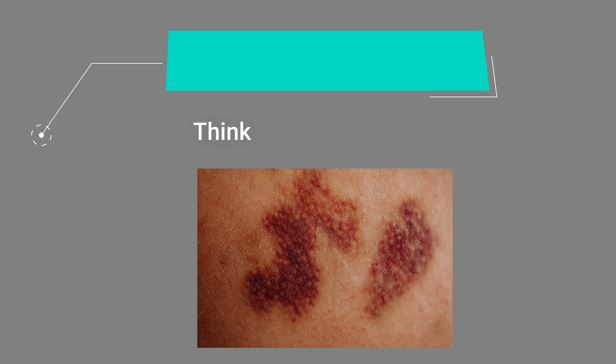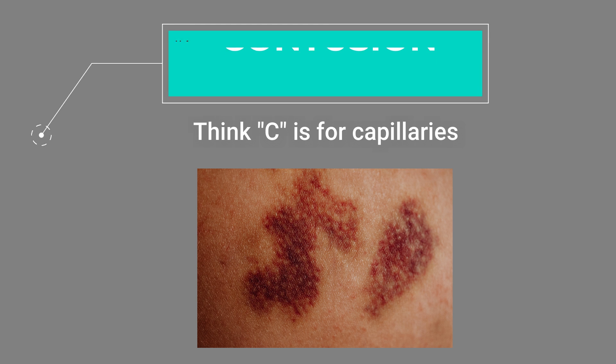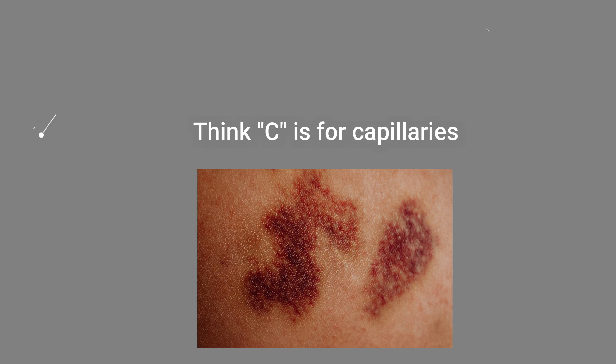Next we are moving on to contusion. The description of a contusion is an area of broken capillaries or venules beneath the skin with extravasation of blood. Think contusion and capillaries — the C and the C go together.